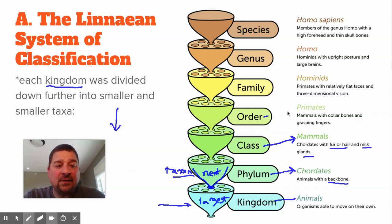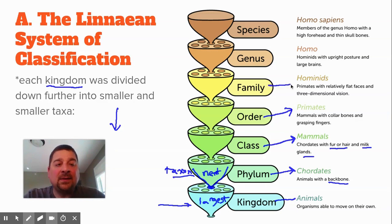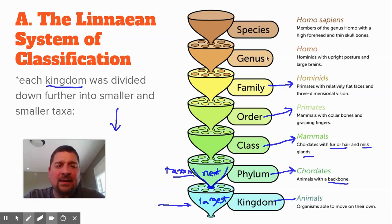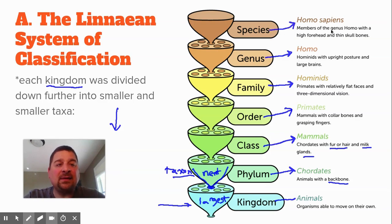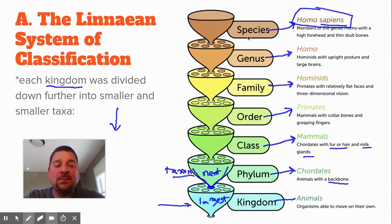Then of all the animals with backbones, we're put into a class with mammals — animals with fur or hair that have milk for their young. And then even further down into primates, mammals with collarbones and grasping fingers. Then hominids, which is more of a human type — us and cavemen and those kinds of things — with relatively flat faces and three-dimensional vision with our eyes facing forward. And then even more broken down into our genus, which is Homo — hominids with an upright posture, big brains, and we walk upright. Our species is sapiens — high forehead and thin skull bones. The species name is sapiens, but the whole thing, Homo sapiens, is the scientific name, and oftentimes you'll see both listed under the species category even though Homo is technically the genus name.